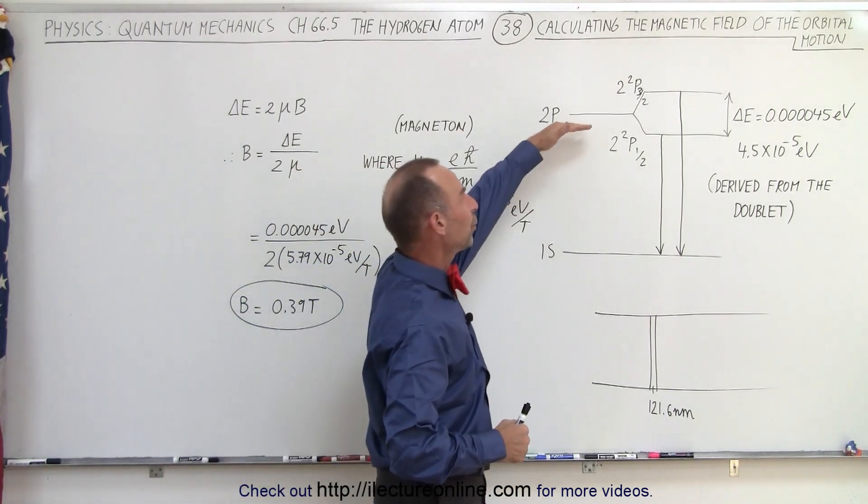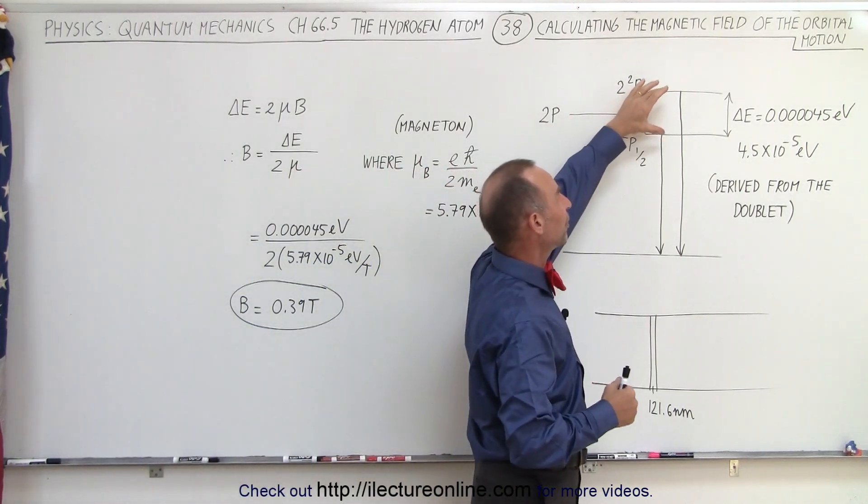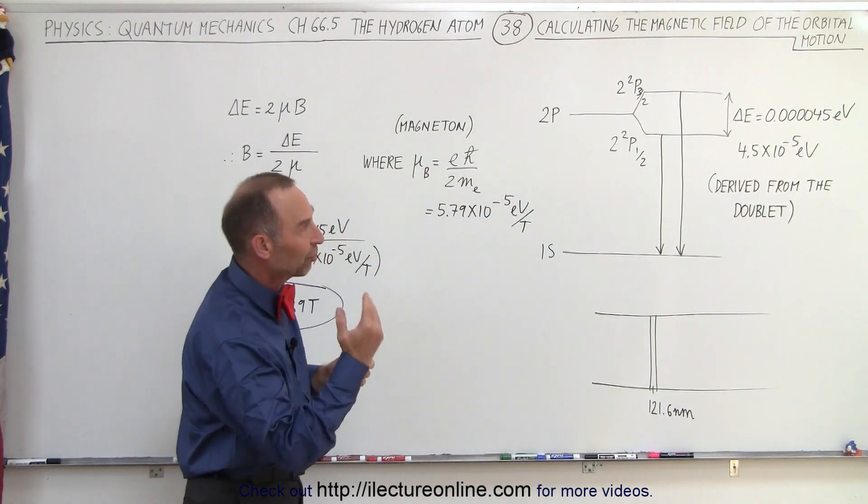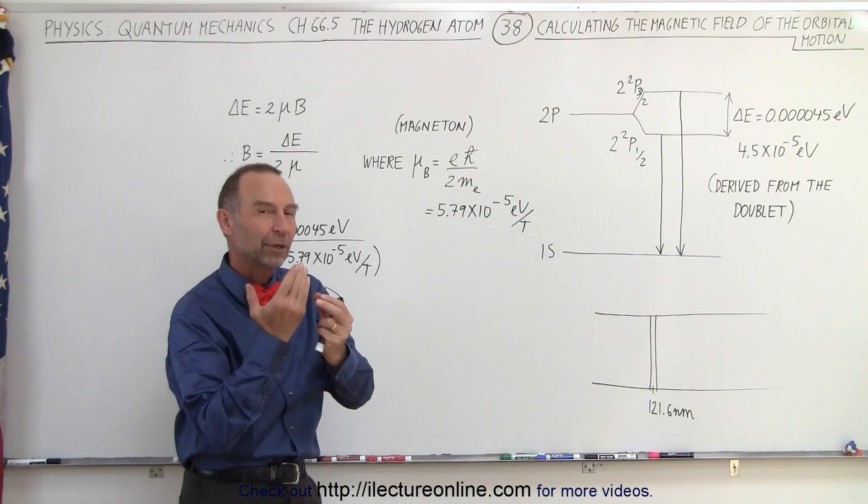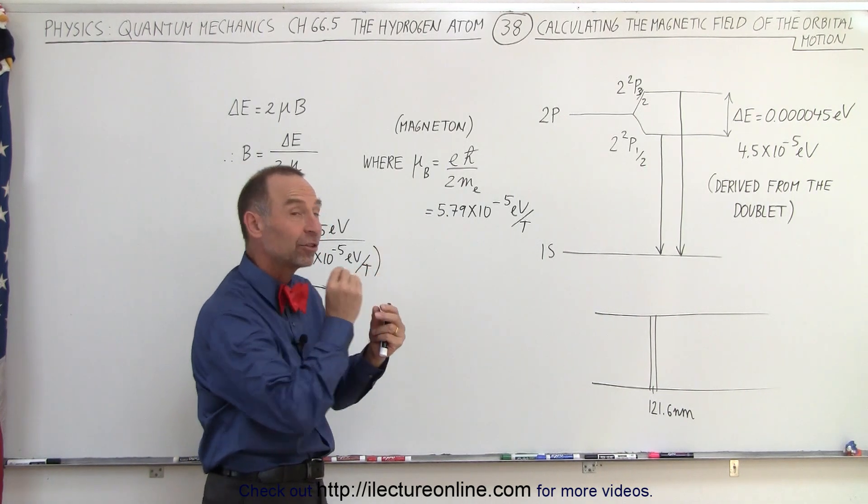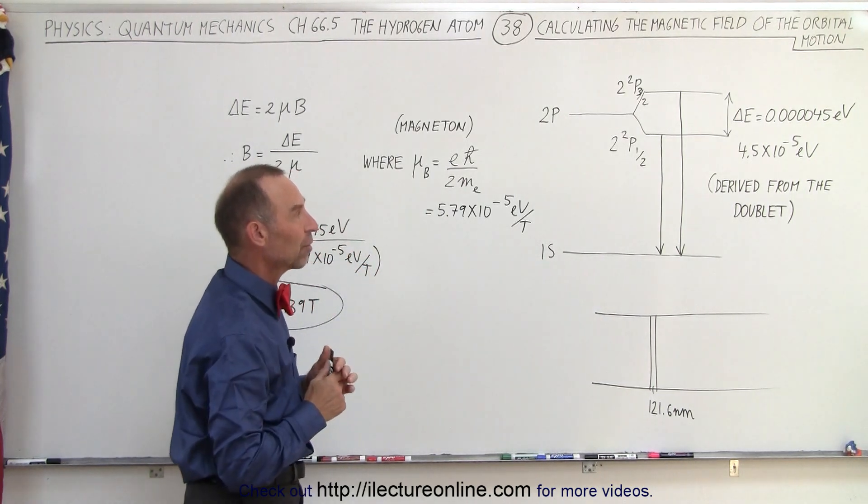We now realize that in the 2p orbital there's actually a slight differentiation in the energy levels depending upon if the electron is spin up or spin down, because there's an interaction between the spin and the magnetic field caused by the orbital motion of the electron.